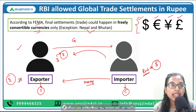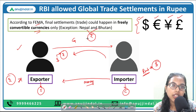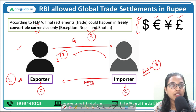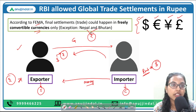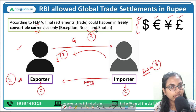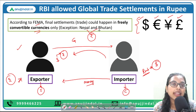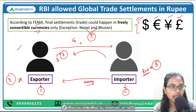Apart from these freely convertible currencies, no other currencies are allowed for global trade settlements in India. However, there are exceptions for Nepal and Bhutan, where the rupee is also accepted as a medium of exchange, so transactions with those countries can be done in rupees as well.